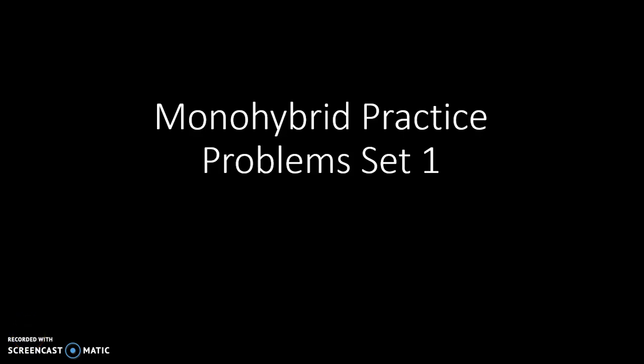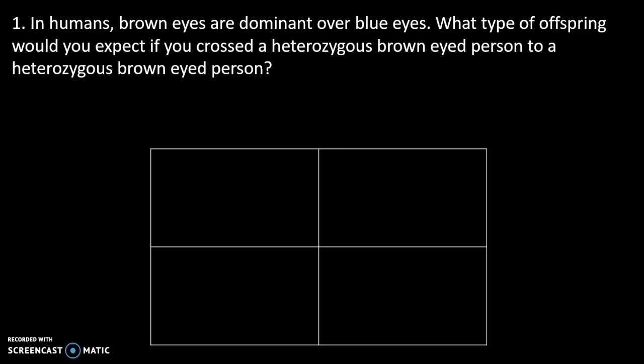I'm here to do some practice problems with monohybrid crosses. We're going to continue to assume Mendelian traits and complete dominance as we walk through and do them. We did these in class, but I just want to make sure that you've got a resource where we can go through and look at all of them.